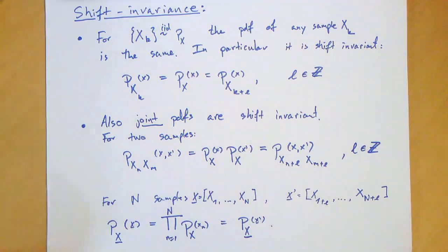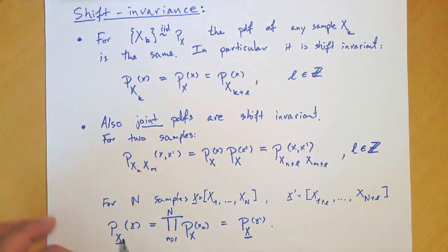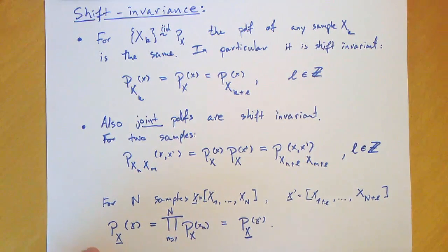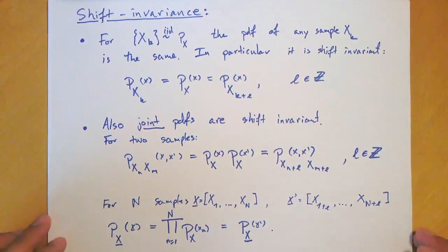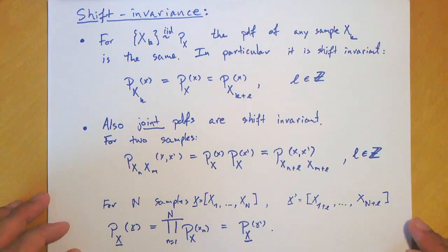And actually, if you consider N samples, so here we consider whole sample vector, and we also consider the shifted version of the vector where we shift by L, the same holds true. So the joint PDF of the vector, this whole vector, is the same as the joint PDF of this whole vector. We look much more into shift invariance when we discuss stationarity or stationary processes.